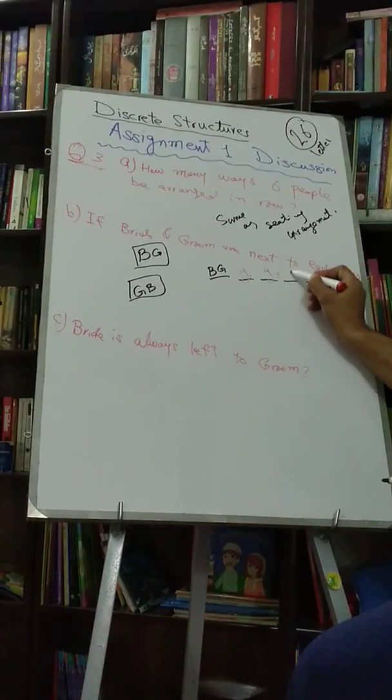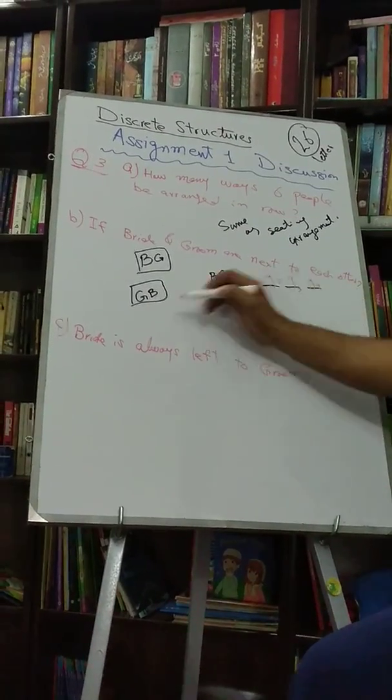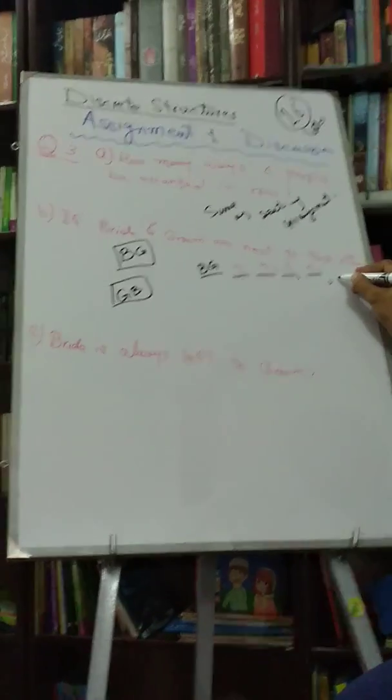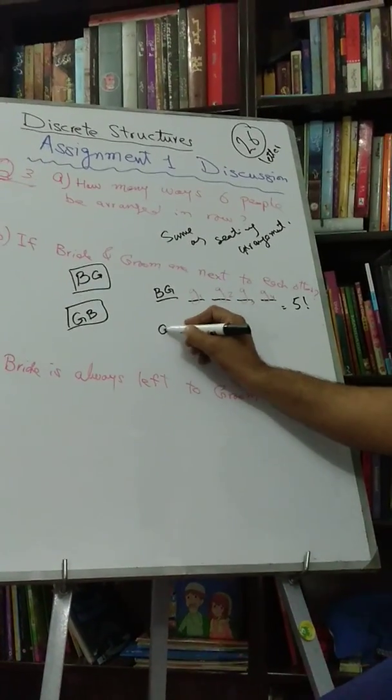So let's call them guests. G1, G2, G3, and G4. In how many ways we can arrange? So we have answer is pretty much obvious, in five factorial ways. But B and G could be G and B.